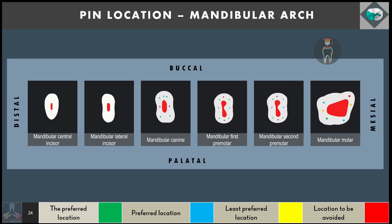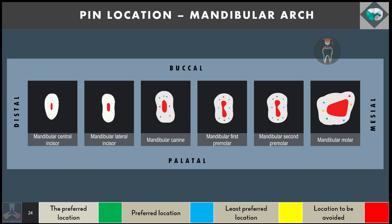In the mandibular arch: pin placement should preferably be avoided in mandibular central and lateral incisors due to the very limited and narrow tooth structure. In the mandibular canine, mesial and distal placement should be avoided. For mandibular first and second premolars, placement close to the buccal and lingual direction should be avoided. For mandibular molars, pin placement at the mesiobuccal aspect should be avoided. These locations are avoided because the risk of pin penetration into the pulp chamber or to the external tooth surface is higher.